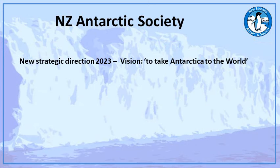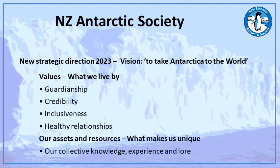Moving on to the New Zealand Antarctic Society: given all that information, post-COVID the Society decided it needed to take a serious look at itself and what it was doing — to get its head above the parapet and start talking about these issues. We've redone our strategic direction and are looking to take Antarctica to the world. The values we're living by are guardianship — advocating on behalf of the Antarctic — and credibility: we are an independent organisation, which is really important so we can speak up where other organisations can't. We want to increase our inclusiveness and build healthy relationships with environmental organisations, Antarctic organisations, government agencies and so forth.